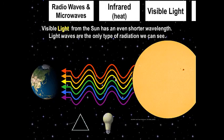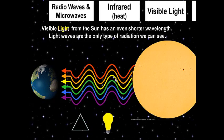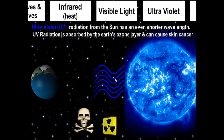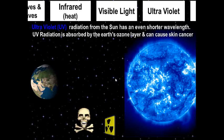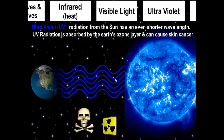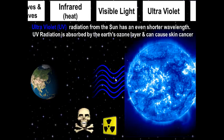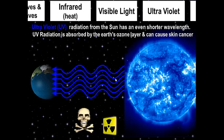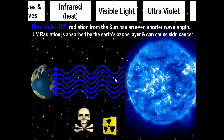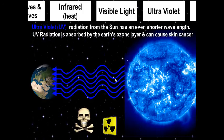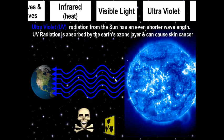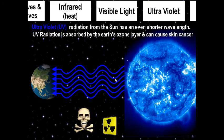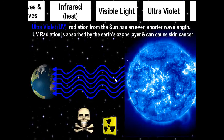Even more dangerous than visible light is ultraviolet radiation. We're getting into shorter-wavelength radiation, which is more dangerous. Too much UV radiation can cause skin cancer. Luckily, we have an ozone layer which protects us from most of the ultraviolet radiation from the Sun.